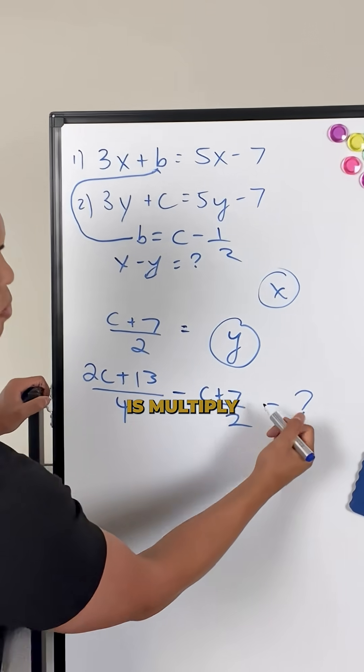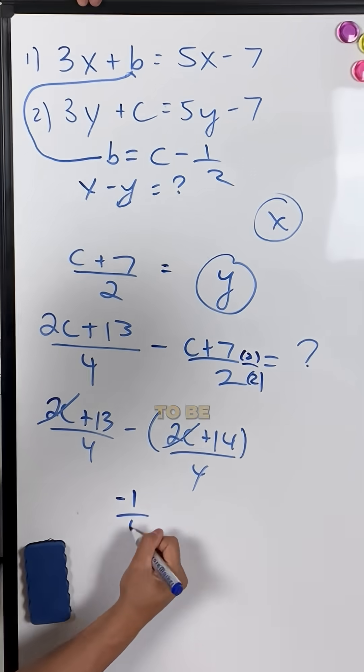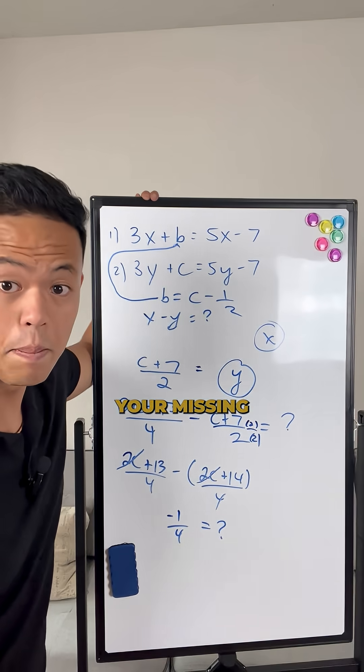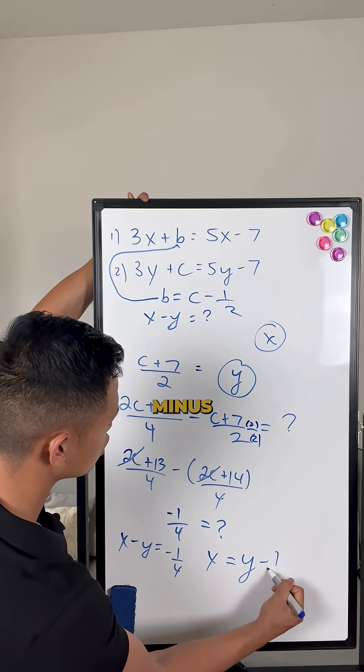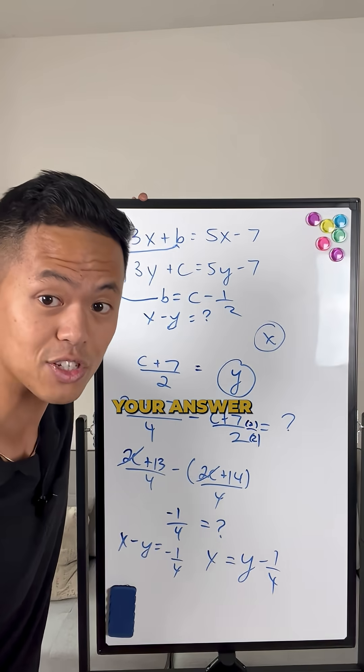Very simple now. All we need to do is multiply this side by 2 over 2. That's going to be all over 4. That is your missing constant. x is equal to y minus 1 over 4, which means that a is your answer.